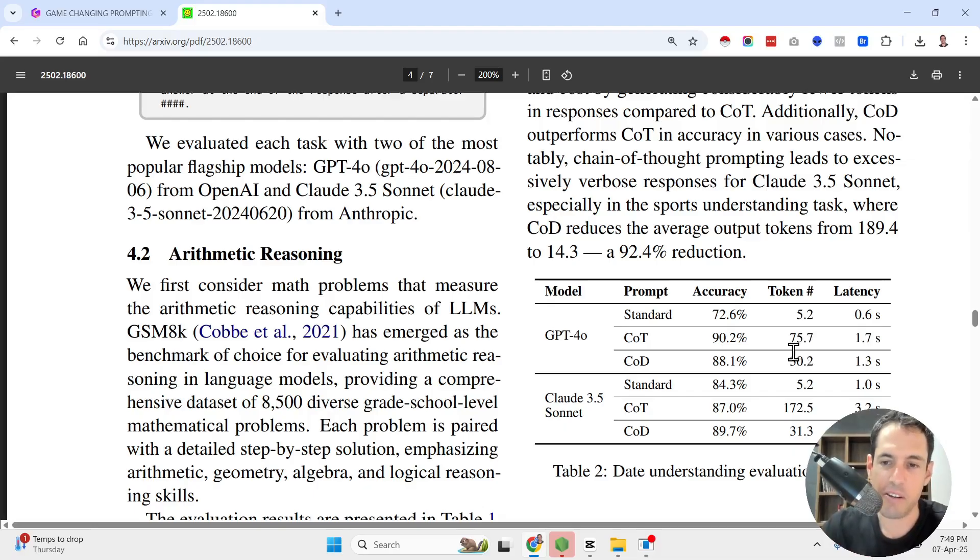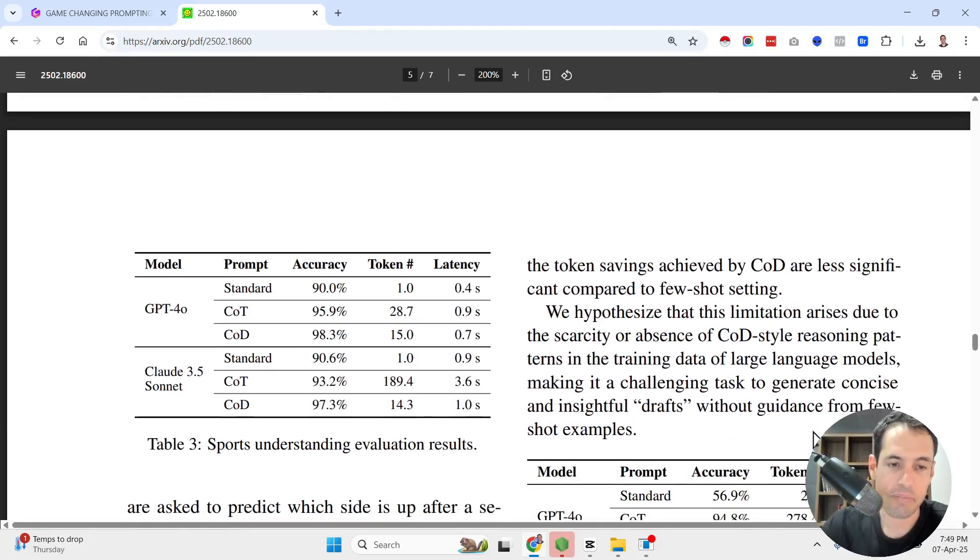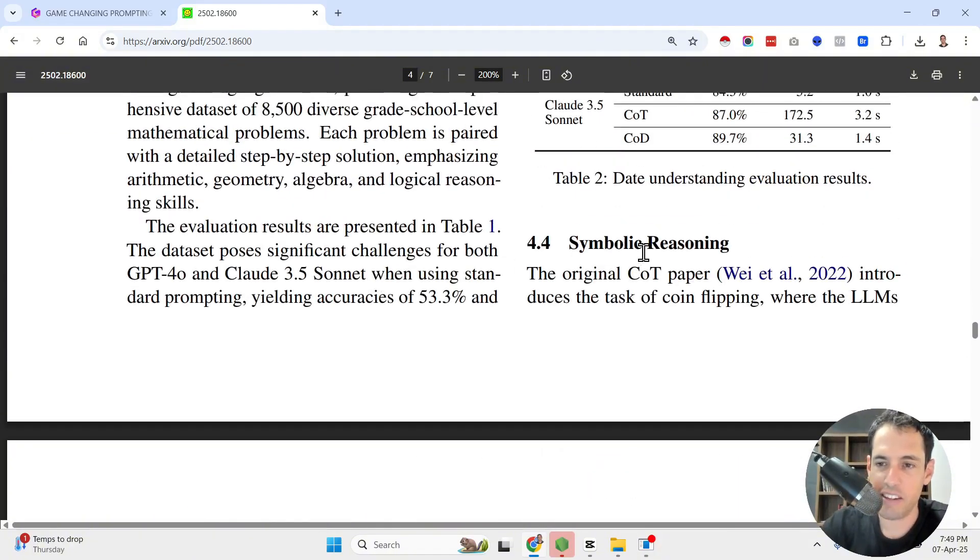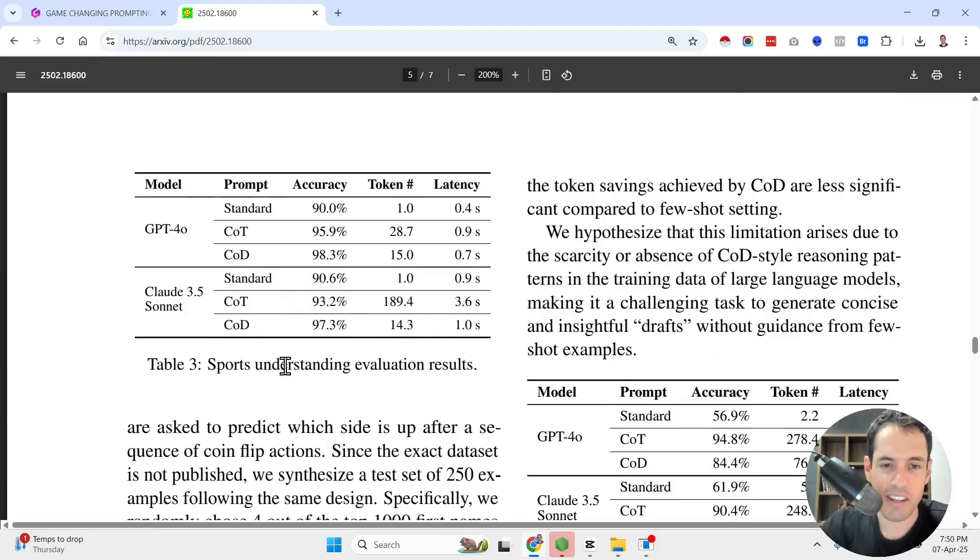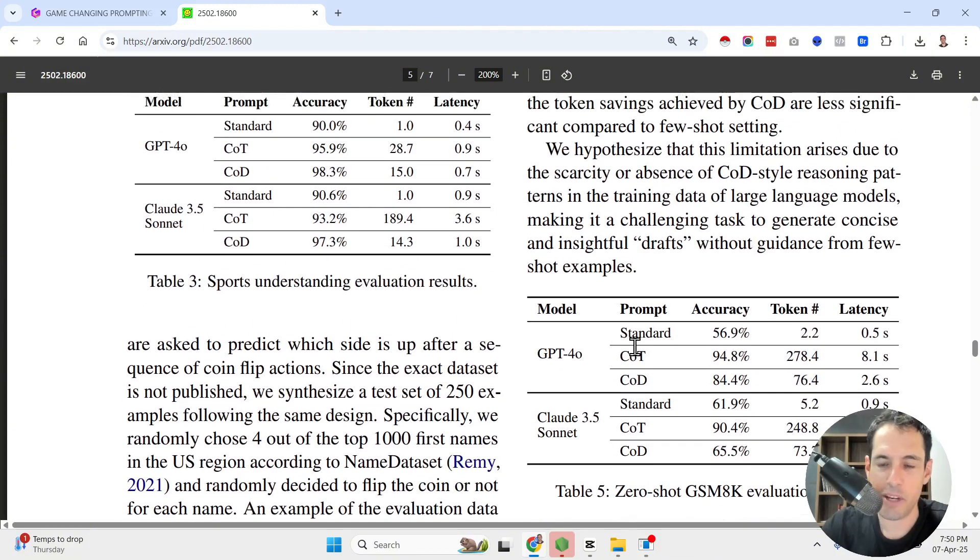But again, depending on the different use case. But in general, you can see that the chain of draft produced really accurate results. And obviously, along the board, it used less tokens and the latency was faster. Now, this is especially important when you're trying to optimize for speed or for cost. This is another different use case, symbolic reasoning over here. And as you can see, and the sport understanding evaluation results. So, you can see here that the chain of drafts actually yielded even better results than the chain of thought while keeping the tokens count smaller and the latency also shorter. And this is another benchmark. I'm not going to cover each benchmark, but as you can see, in different benchmarks, the chain of draft yields different results. Sometimes even better than the chain of thought, but always the tokens and the latency are way better.